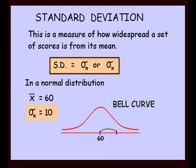If we jump up one standard deviation — in other words go up by 10 — we'd be up to the score of 70. From 60, if we go down one standard deviation by 10, we'd be down to 50. The first result is that 68% of scores lie between 50 and 70. That's our first result. I didn't do any calculation there — that's a known result: 68%.